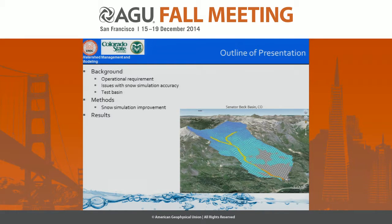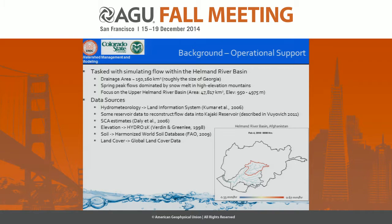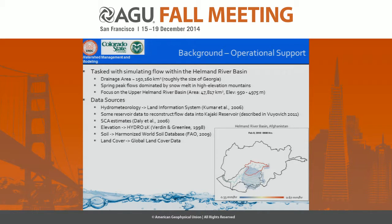This presentation starts with the background — the operational requirement to simulate flows in the Helmand River Basin in Afghanistan. We had issues with snow simulation, so we used a test basin in Colorado to make improvements. The Helmand is a very large basin, about the size of Georgia. Spring peak flows are dominated by snowmelt. Our data sources were very limited: we had a land information system for hydrometeorology data and some data to calibrate against at the outlet of the upper Helmand River Basin, where there's a reservoir we used to back out flow estimates.